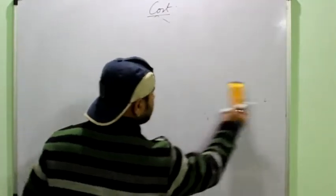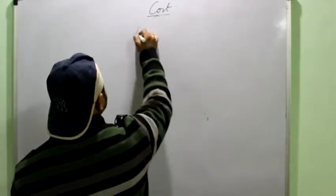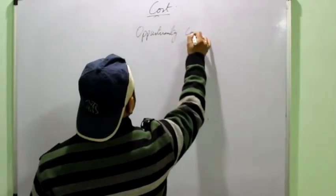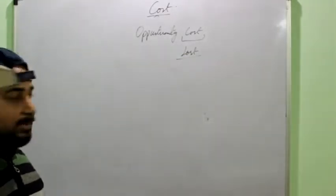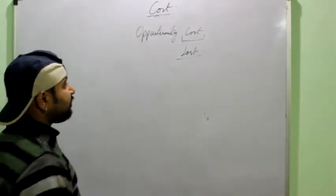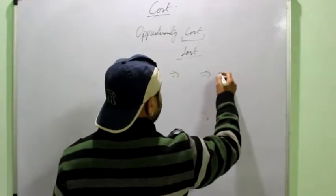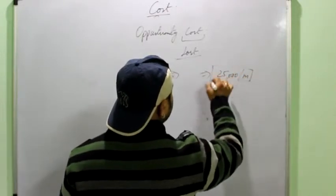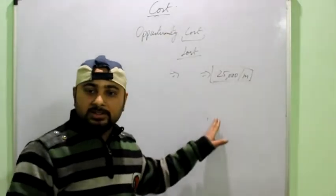Then one more concept of cost is opportunity cost. We have already studied it in the first chapter. Opportunity cost, I told you opportunity cost is actually the opportunity lost, anything that you have sacrificed. For example, if I had to work in my restaurant and say maybe I was doing a job before that and say 25,000 was the salary per month. So, this is the opportunity cost. If I withdraw from the job and start my own business, this will be the opportunity cost.